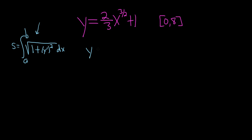So y prime, we'll bring down the 3 halves, so we'll have 3 halves times 2 thirds, and then we have 3 halves minus 1 because we subtract 1. That's really 3 halves minus 2 halves, which is 1 half. And the derivative of 1 here is 0. So these cancel. So we get y prime equals x to the 1 half.